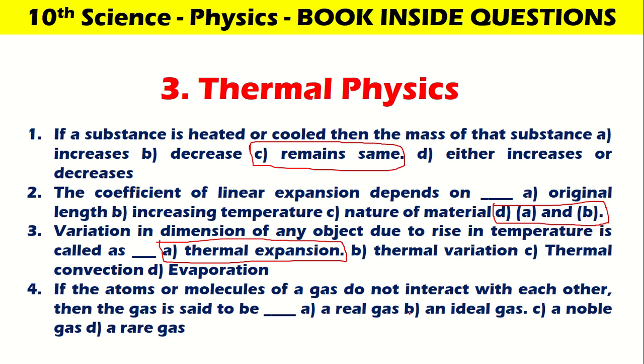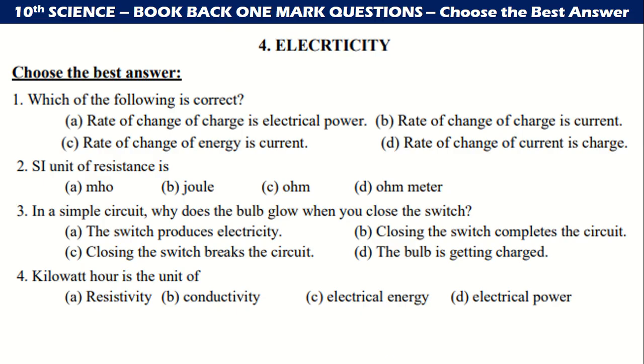Electricity. Which of the following is correct? Rate of change of charge is electrical power, rate of change of charge is current, rate of change of energy is current. The answer is rate of change of charge is current. SI unit of resistance is ohm.